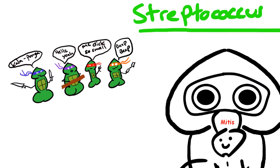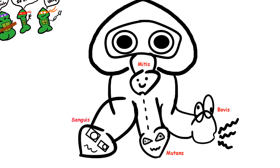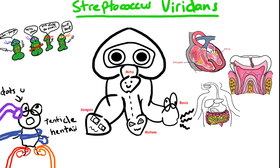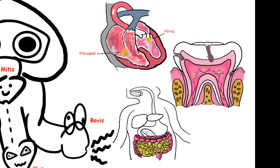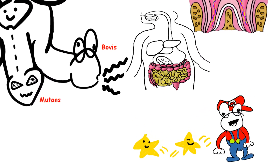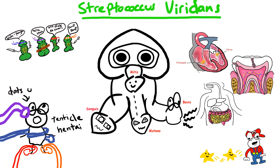We will begin by covering the organisms that compose the Streptococci viridans group, their characteristics, their virulence factors, the organ systems affected by them, and the treatment options based on the type of infection. We'll also cover some of the mechanisms of action of the antibiotics we can use against them.